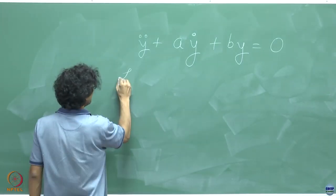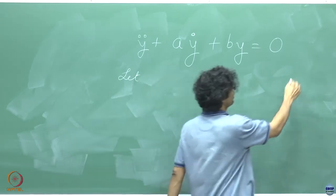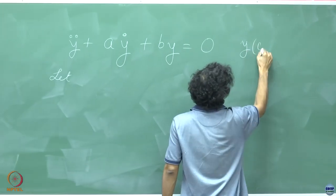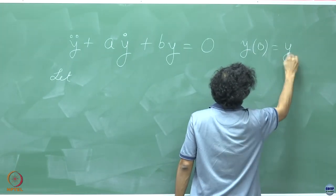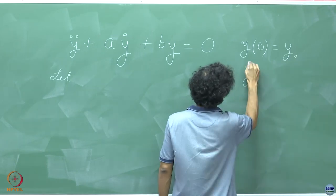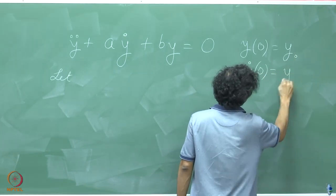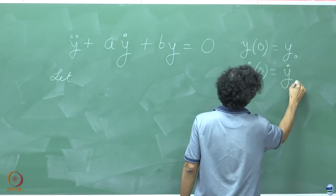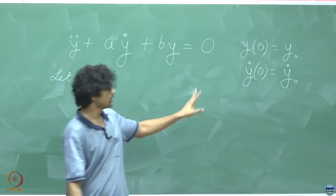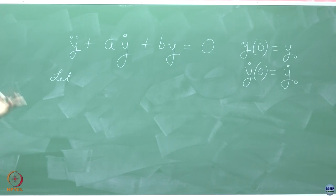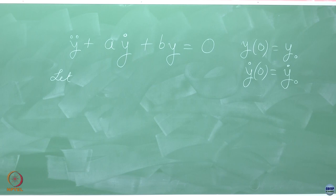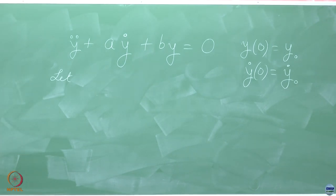You will also need initial conditions: y(0) equal to some constant y0 and y dot(0) equal to y dot 0. You cannot solve a differential equation unless you are given initial conditions — otherwise the solution is just arbitrary. We seek a specific solution corresponding to a specific initial condition.